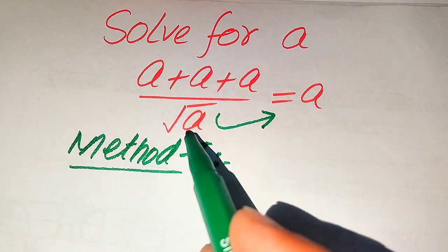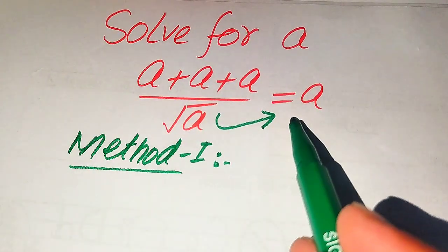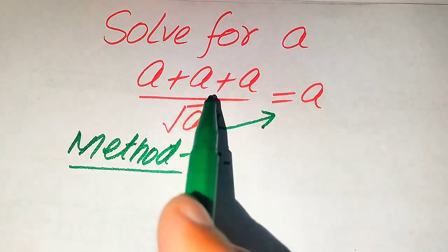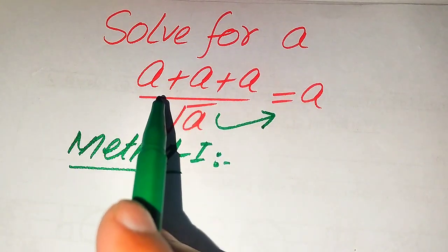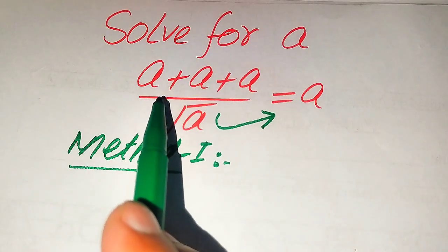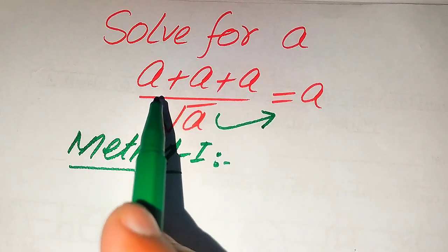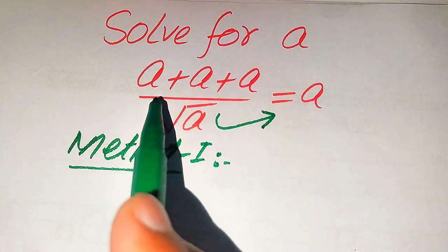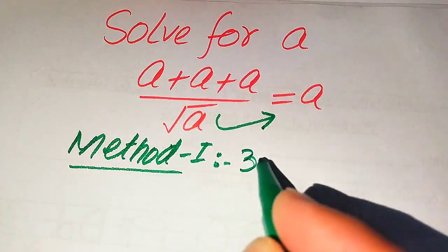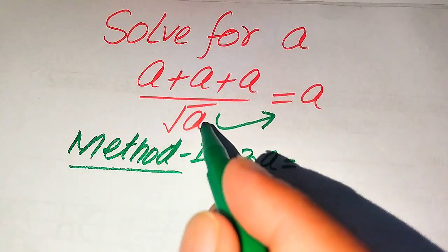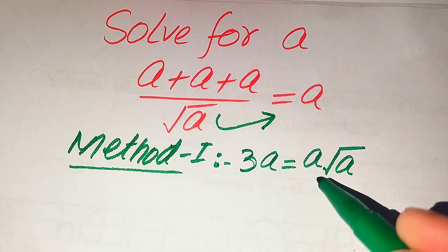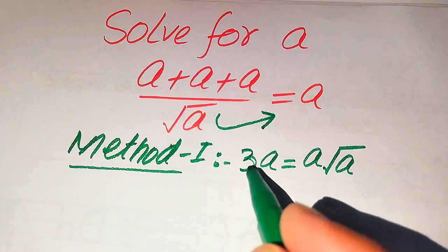This term is dividing the left-hand side; when we move it to the right-hand side it multiplies. On the left-hand side we need to add a three times, so we add the coefficients of a. The coefficient of all three a's is 1, so adding them gives 3a. Moving the square root of a to the right-hand side, it becomes a times square root of a.